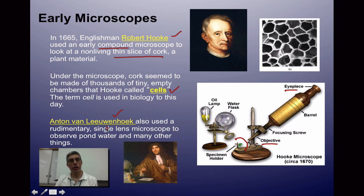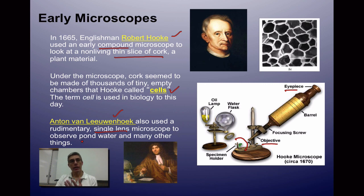Leeuwenhoek, on the other hand, used a single lens microscope rather than a compound scope. He was famous for being the first person to actually see tiny living things — things you normally wouldn't be able to see, like organisms in pond water — but his microscope was able to bring those things into view, which made him pretty significant. Make sure you know information about both of these individuals as we move through Chapter 7.